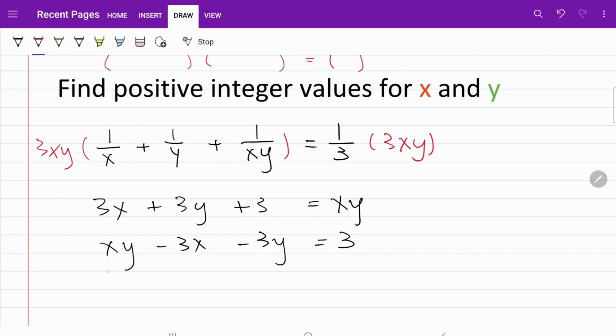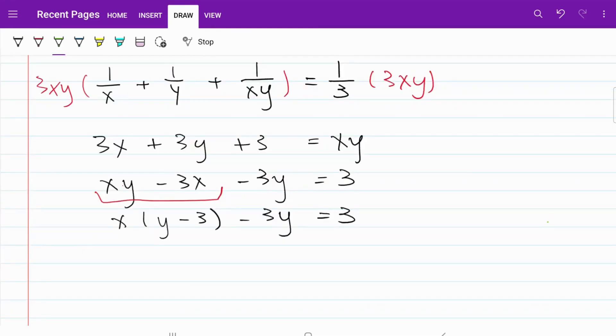If we focus on this part right here, we can take x as the common factor and multiply by y minus 3 in the bracket, and minus 3y, that's equal to 3. From here, we need to figure out a way to turn this into something that looks like a multiplied by b is equal to c. We can do that by adding a substitution.